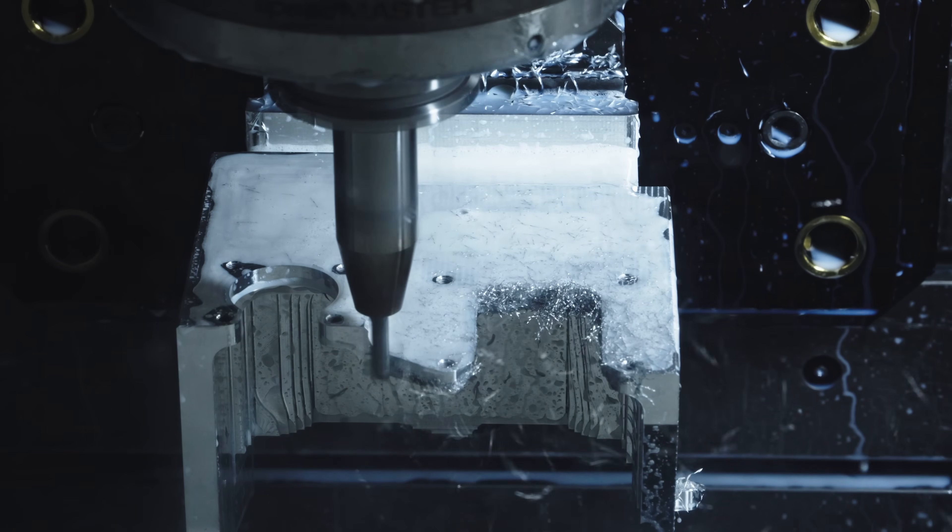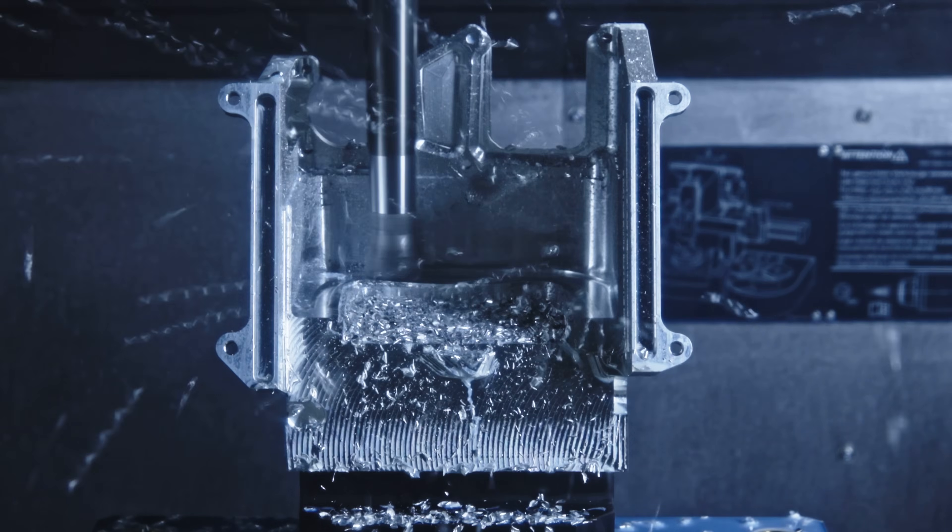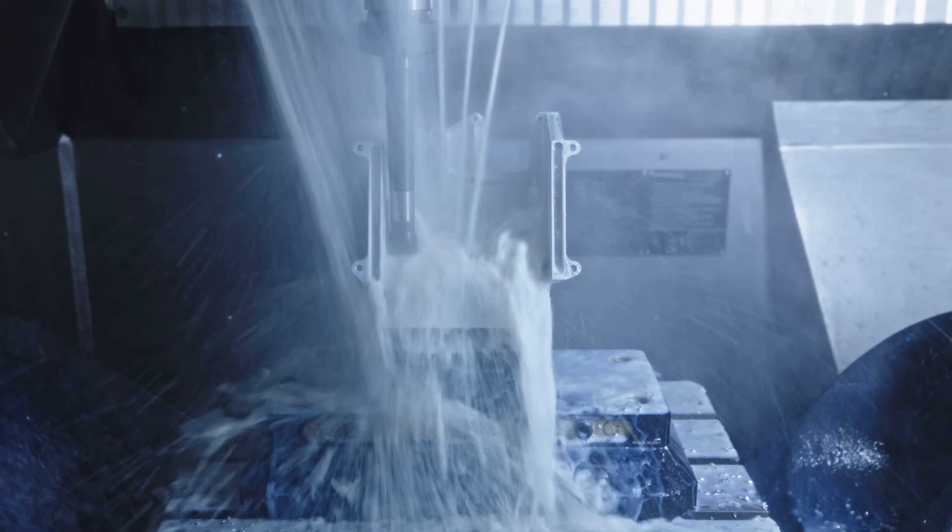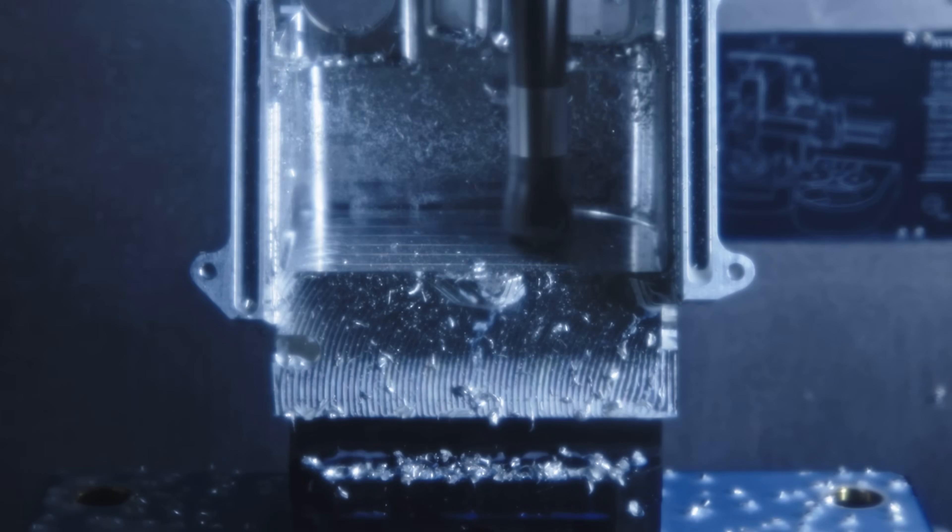Given the thin, tall geometry, we'll be using this high-feed mill from PH Horn to remove the remainder of this material. This high-feed mill has really low radial forces and really high axial forces. We're getting exceptional surface finishes even though we're just roughing.